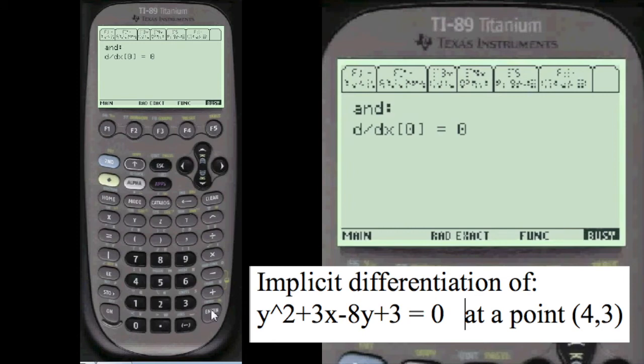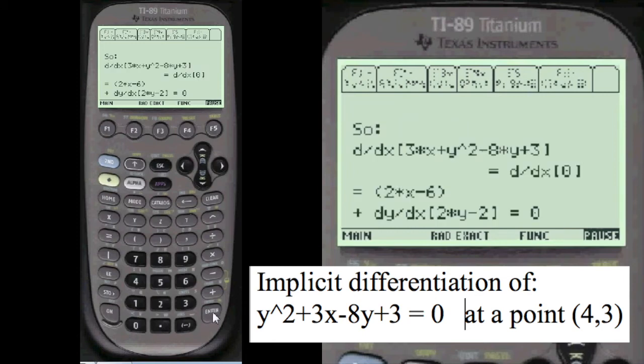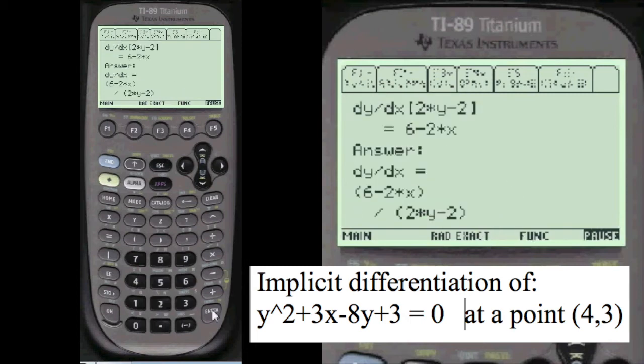You have to use alpha 4. Then we combine the dy dx terms. Separate it from the other terms. And here's the answer right here.